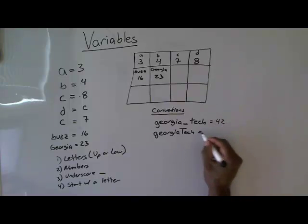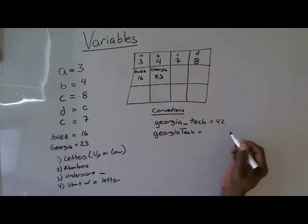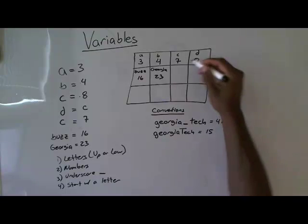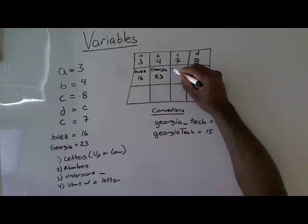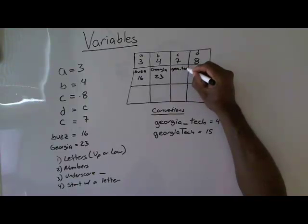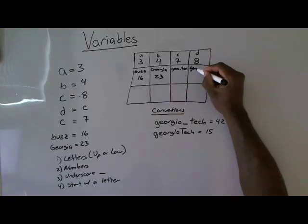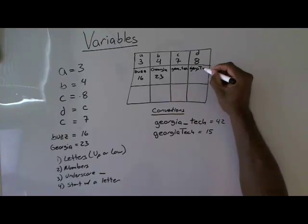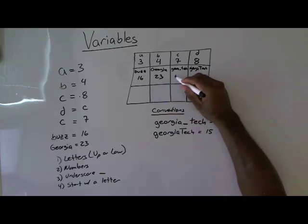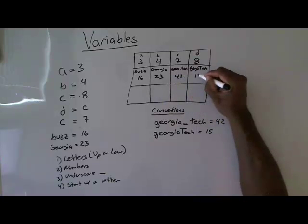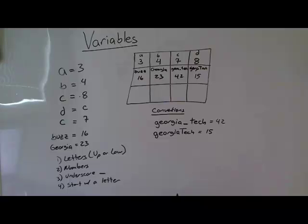So I could do Georgia Tech gets 42, and this Georgia Tech gets 15. And that would create a variable, Georgia Tech, and then the other one is Georgia Capital Tech, and then this one would get 42, and this one would get 15. So those are perfectly valid as well.